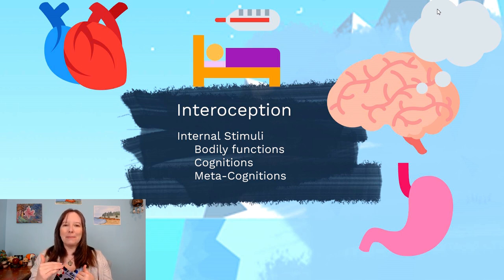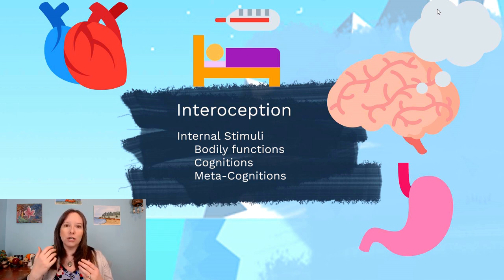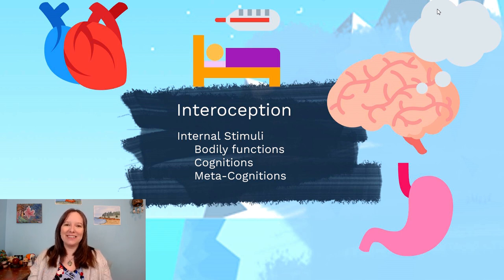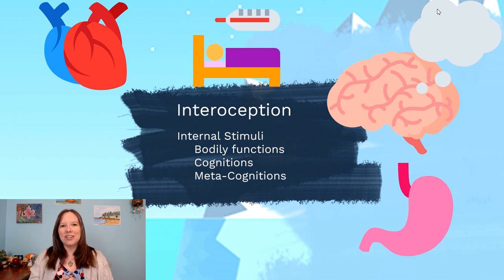Another important aspect of interoception is metacognition. Cognitions are our thoughts, memories, and decisions, but metacognitions are our thoughts about our thoughts. If you're thinking about how you think, studying your own consciousness, or examining how you remember things and make decisions — that is interoception, an internal stimulus, because it's definitely coming from within.